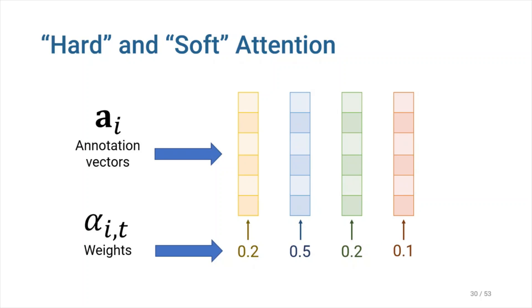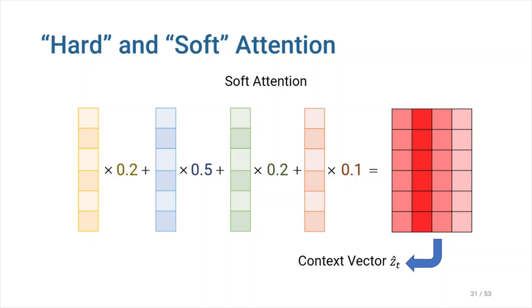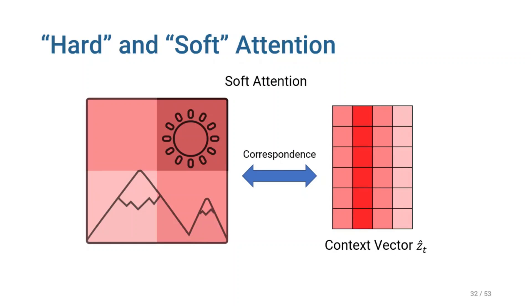In both methods, we first calculate a weight for each annotation vector. The difference between soft and hard attention is the way we interpret these weights. In soft attention, we may simply assign higher values to the parts of the picture that have higher attention weights. As a result, the context vector would include the data from the annotation vector, as well as the relative importance based on the attention weights.